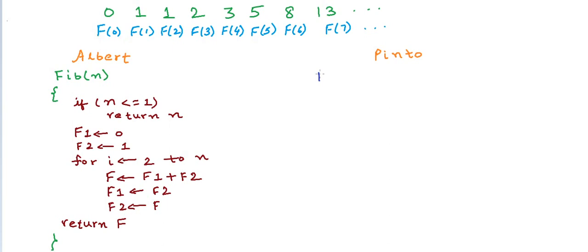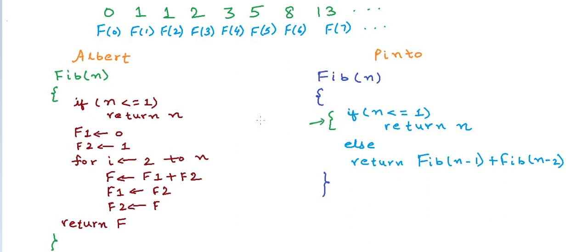Pinto also writes a method Fib, but Pinto has recently learnt recursion and he says that hey, there is a lot more simpler method to solve this problem. His program also goes like if n is less than or equal to 1, return n, but else return Fib of n-1 plus Fib of n-2. He writes a recursion and this particular condition if n is less than or equal to 1 is the base condition or the termination condition so that the recursion does not go on endlessly.